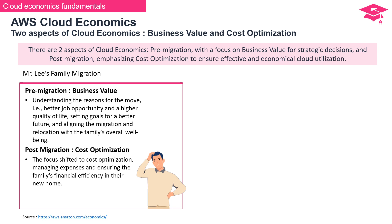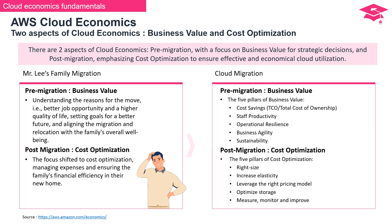After the big move, we're in the post-migration phase: cost optimization. It's like Mr. Lee figuring out the finances in their new home, making sure they're spending smart. In the pre-migration, there are cool pillars: cost savings, staff productivity, operational resilience, business agility, and sustainability. In the post-migration, we've got five pillars too: right size, increase elasticity, leverage the right pricing model, optimize storage, and measure, monitor, and improve. Think of cloud economics like Mr. Lee's journey — first the big decision for a better life, then keeping things efficient and smart in the new place.